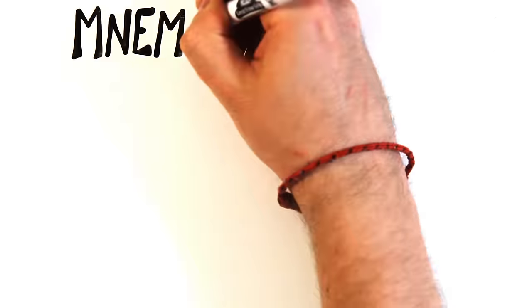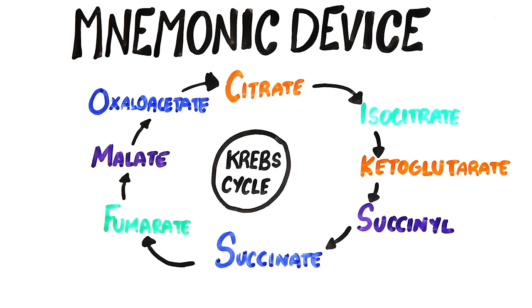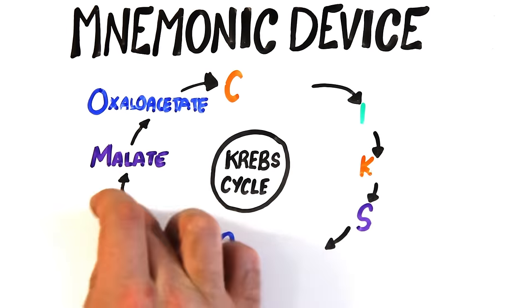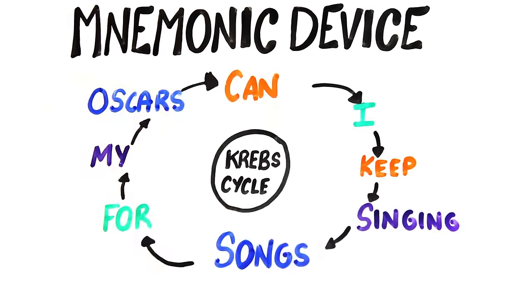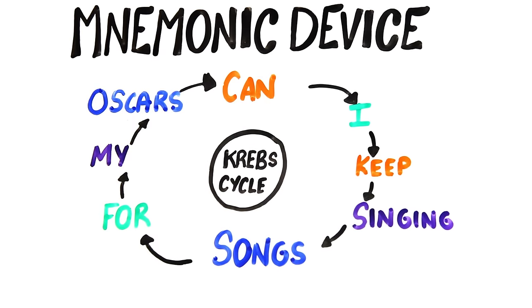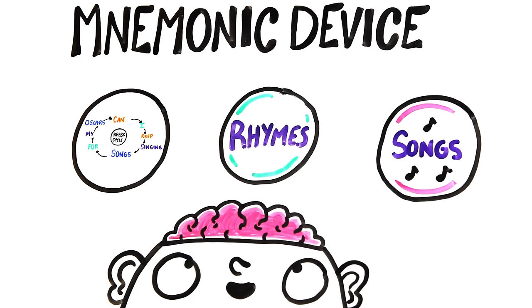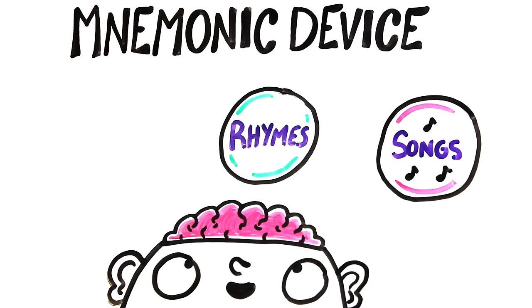You should also use mnemonic devices wherever possible. Trying to memorize the Krebs cycle, take the beginning of each product and make a sentence out of it. Can I keep singing songs for my Oscars? You can also create things like rhymes or songs. This method has been proven in several studies as a way of committing information to memory.